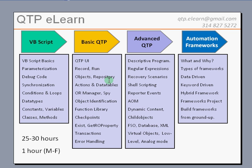Actions and data tables are very important for learning how we apply them in a real-world project. We then go into identifying how we write function libraries, create checkpoints, or use a combination of exist and GetROProperty to run tests without checkpoints. And then transactions and error handling, primarily covering how we test these applications.